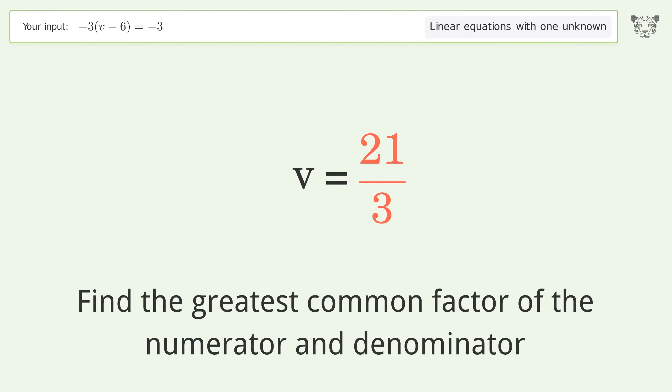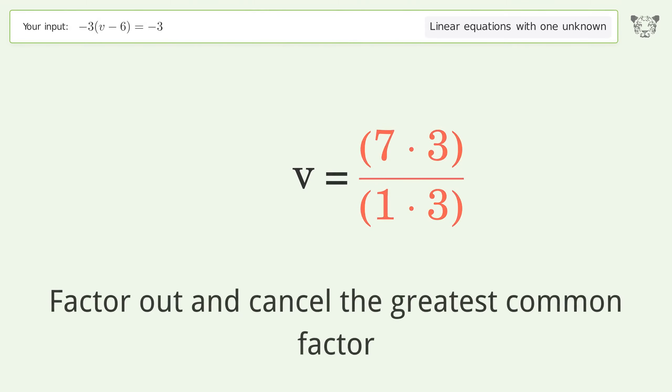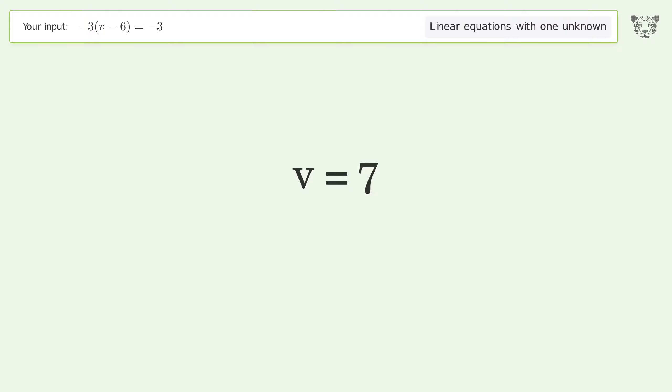Find the greatest common factor of the numerator and denominator. Factor out and cancel the greatest common factor. And so the final result is v equals 7.